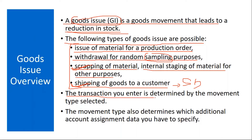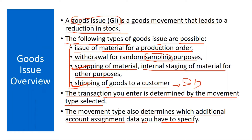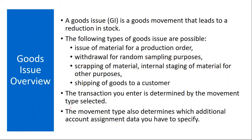The transaction you enter is determined by the movement type selected. For various goods issues, you have movement types. The movement type also determines which additional account assignment data you have to specify — for example, account assignments like production order or cost center — which you enter based on the movement type you select.